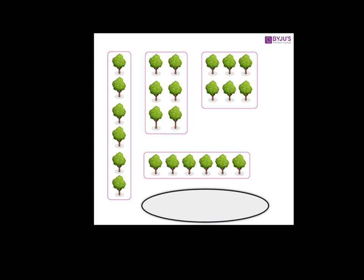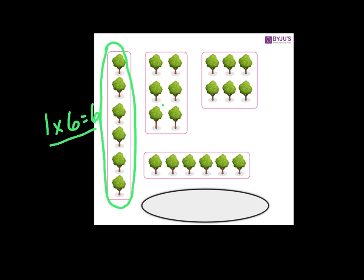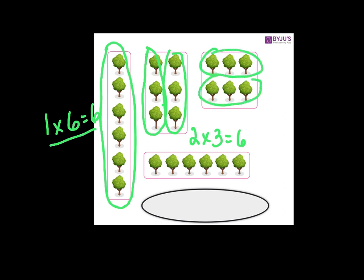Here's a pictograph that shows different trees and how you can display them to show groups. If you look at the first one, we have one column and there are six trees — one group of six, which gives us six. Another way is two columns of three, so two times three, two groups of three, gives us six. We also have two rows of three, another way of showing it. And down here, one group of six equals six. These are different ways of showing how we can group numbers together to get a product.